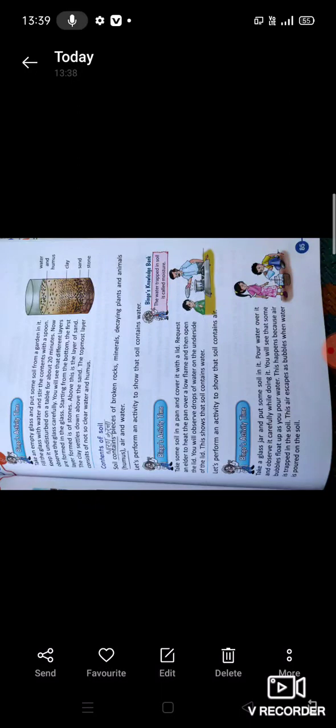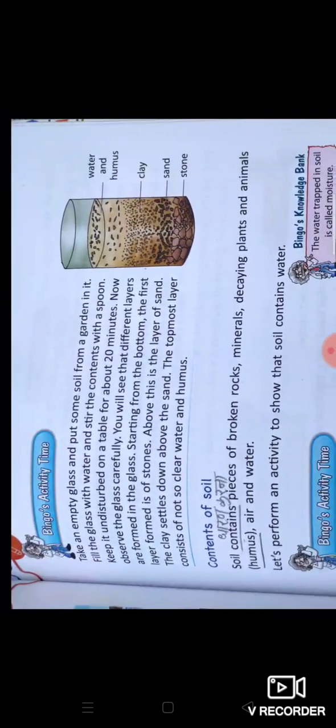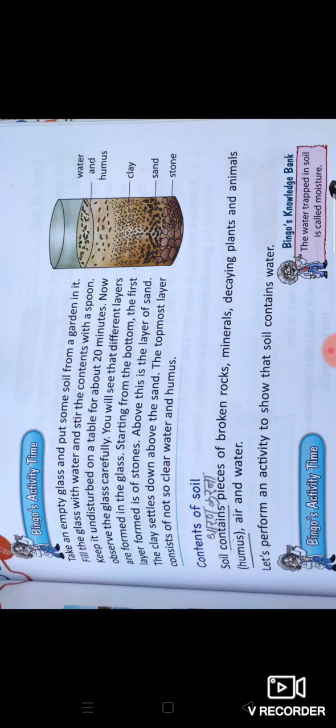Good morning everyone. Today we read lesson 10: Drugs and Soil, part 3. Bingo's Activity Time. Take an empty glass and put some soil from a garden in it. Fill the glass with water and stir the contents with a spoon. Keep it undisturbed on a table for about 20 minutes. Now observe the glass carefully.